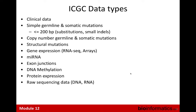There are a lot of data types in ICGC. Clinical data is important. There are mutations from both germline and somatic sources. Somatic mutations are open access — you don't have to get DACO approval. Germline mutations are controlled access because they can identify a patient. We also have copy number, structural variations, gene expression, microRNA, exon, DNA methylation, and protein expression — very diverse data types within ICGC.